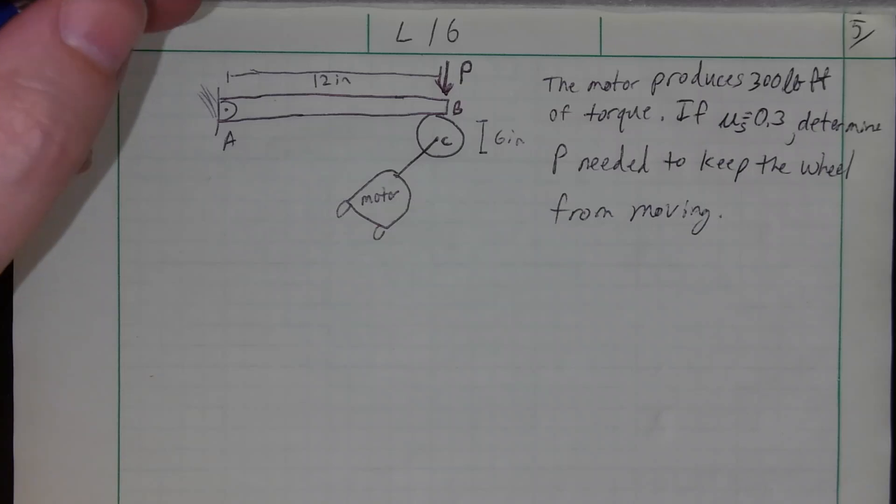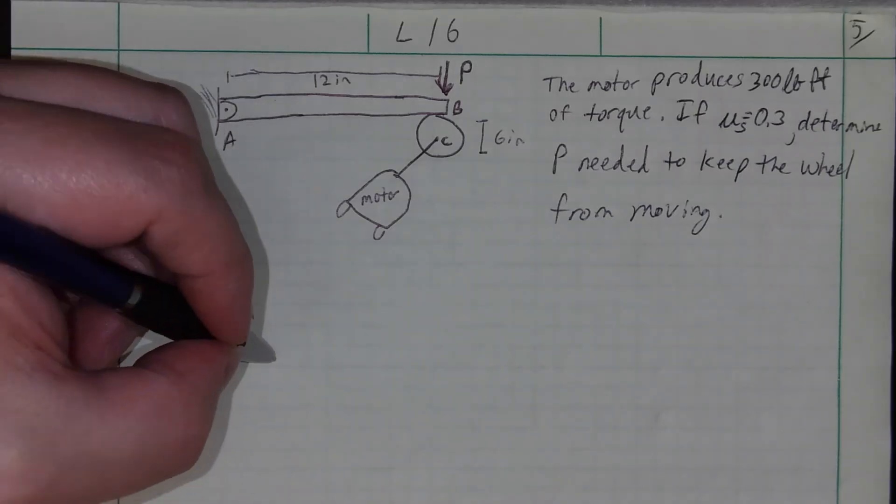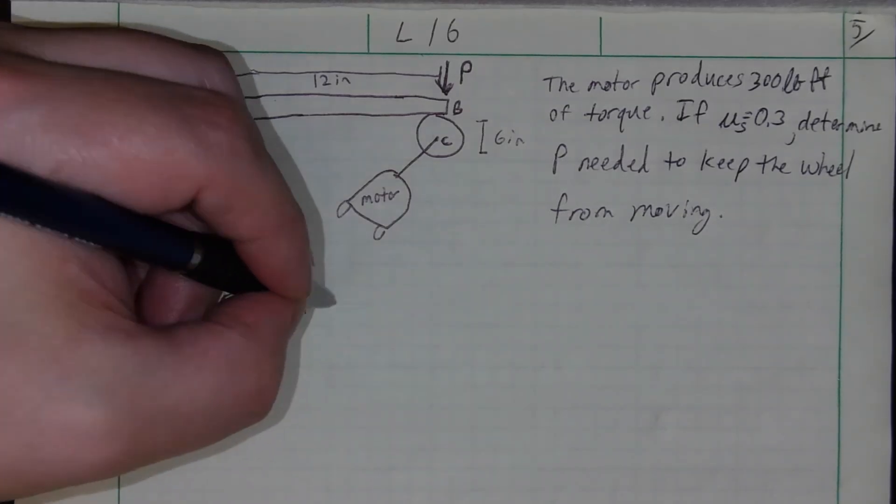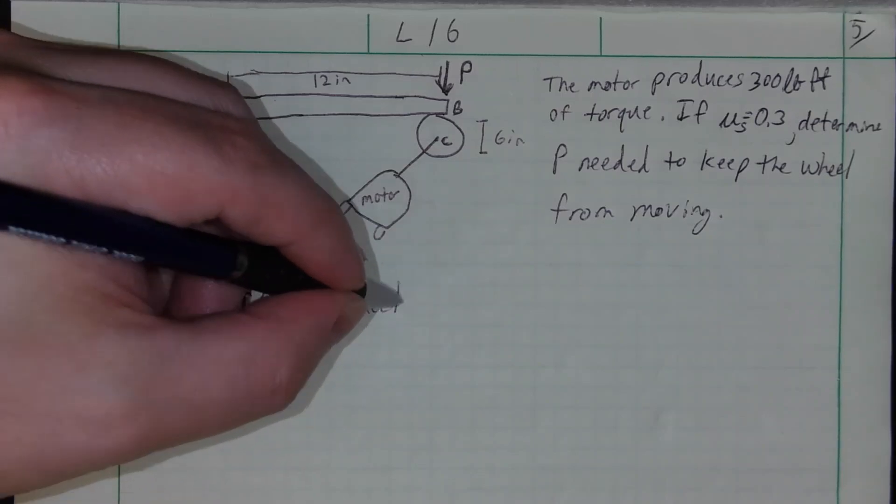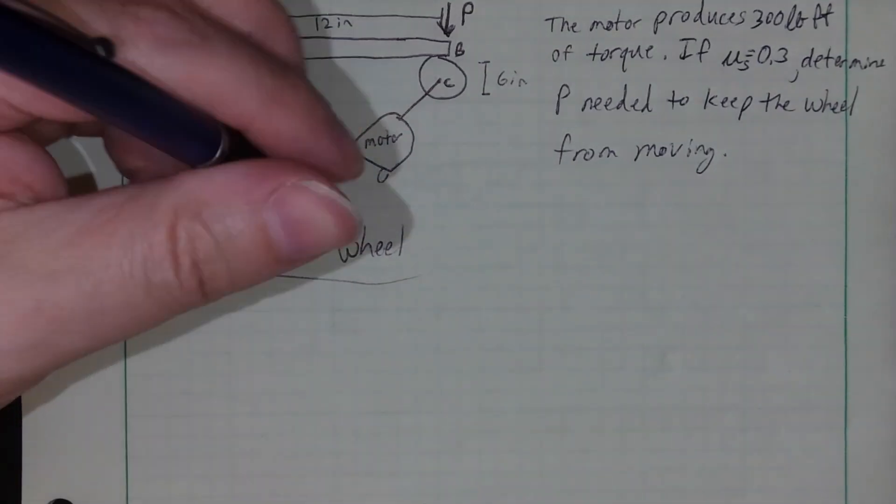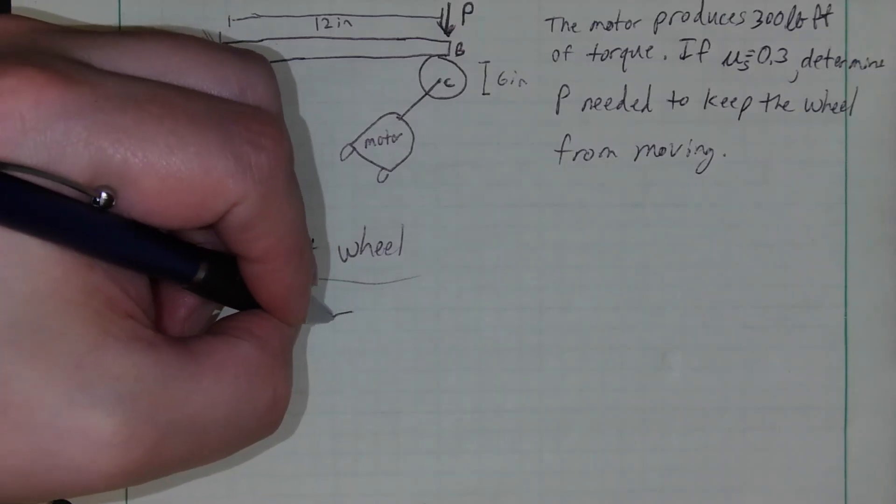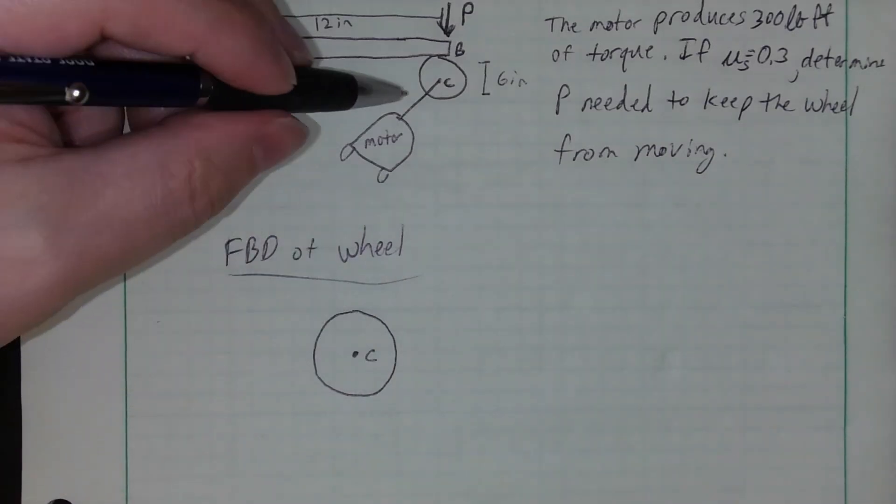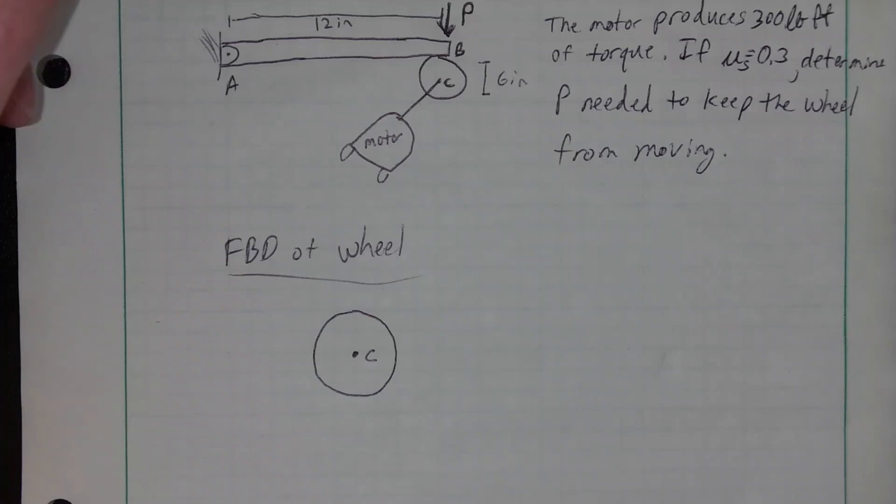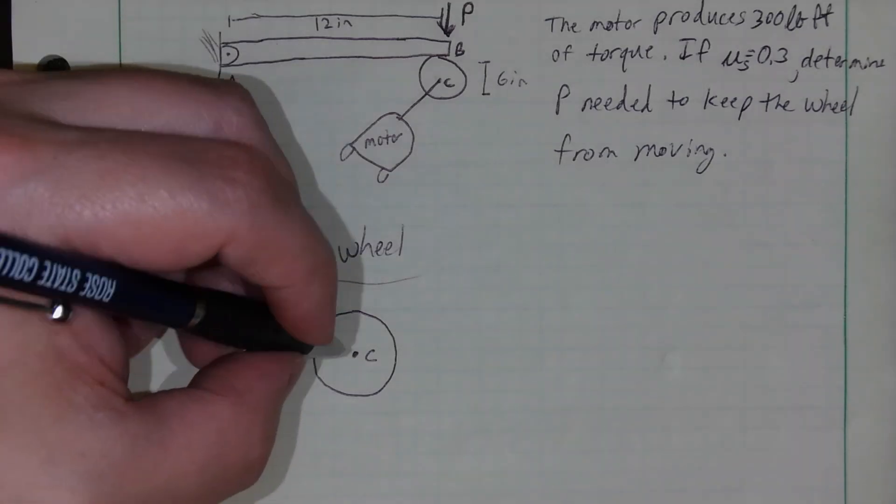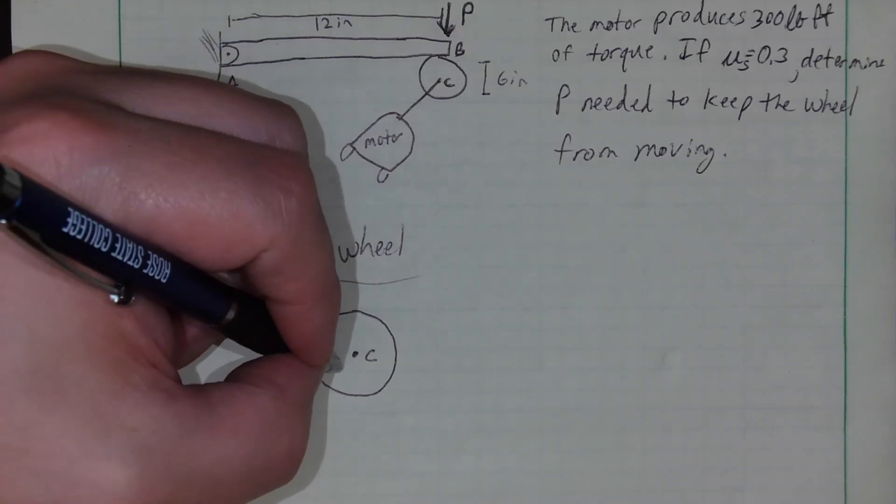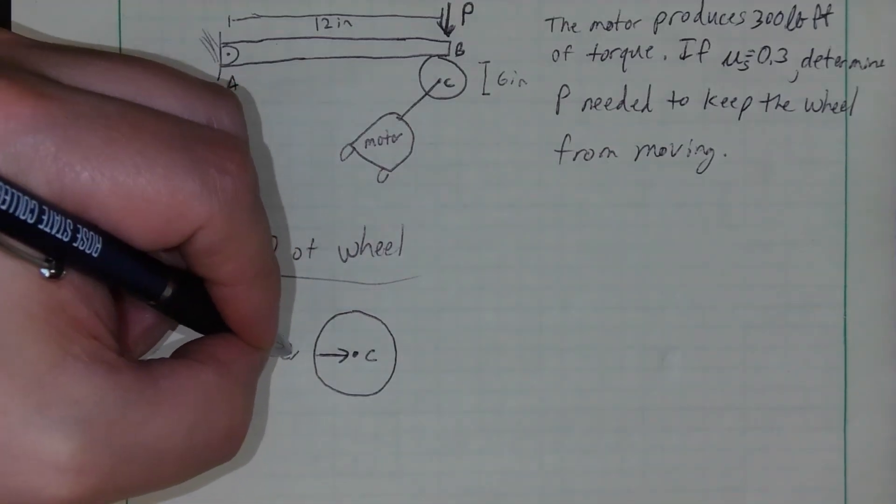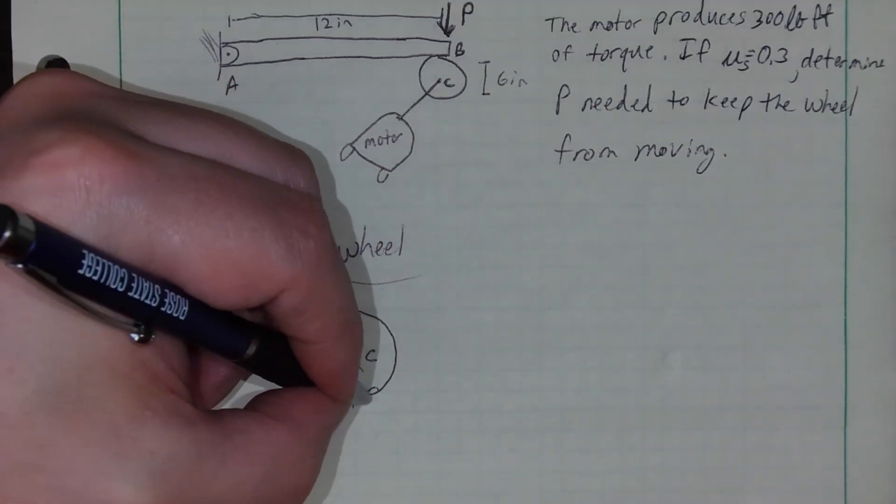You're often going to want to draw free body diagrams of each of those and analyze those independently. Now you could analyze the whole thing, but this is what I'm going to do. I'm going to draw a free body diagram of the wheel first and look just at the wheel first. So if I do that, this is point C.